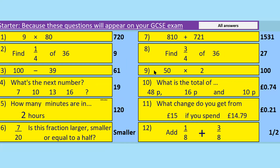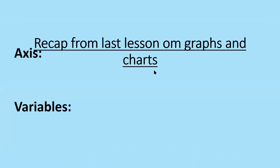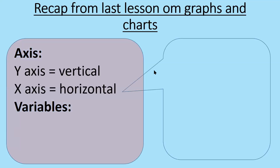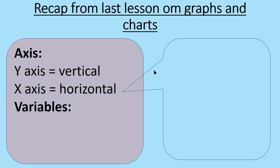Let's have a quick recap from our last lesson on graphs and charts. Does anyone remember how many axes a graph or chart needs? It needs two axes: an x-axis and a y-axis. The x-axis goes left to right — it's horizontal. The y-axis goes top to bottom — it's vertical. I'll pause briefly so you can answer some questions before I give the answers.